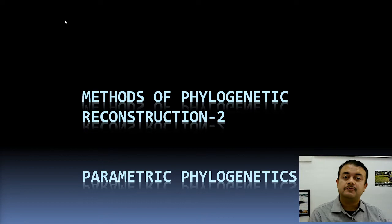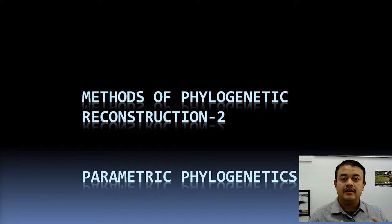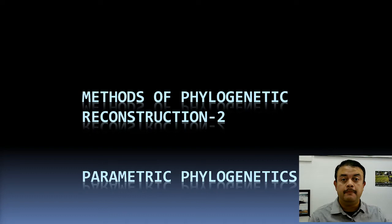This is the second part of the methods of phylogenetic reconstruction. In this class we will discuss parametric phylogenetics. The term parametric versus non-parametric came up when we discussed biostatistics. A parametric test like the student's t-test or ANOVA is distribution-dependent — it depends on what kind of probability distribution or frequency distribution the population comes from.